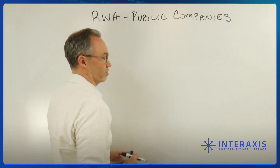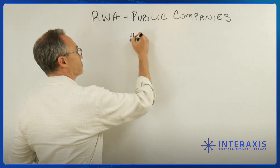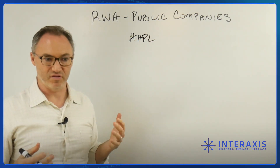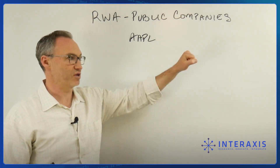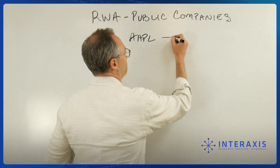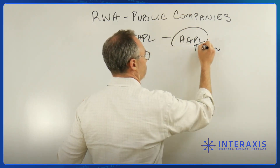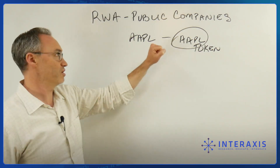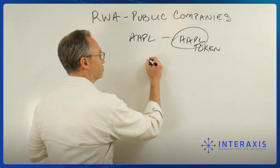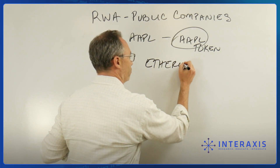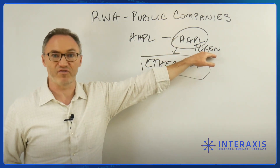Now, with public blockchains, we have the technology to take shares of public companies and create tokens. This is not a crypto asset token — it's just a share of Apple, but instead of being represented by a stock certificate held with a custodian like Fidelity, it could be an Apple token. It doesn't look any different. So now we have an Apple token — I'll denote it by drawing a circle around it — represented on a blockchain, say the Ethereum blockchain. This Apple token is a fungible token.